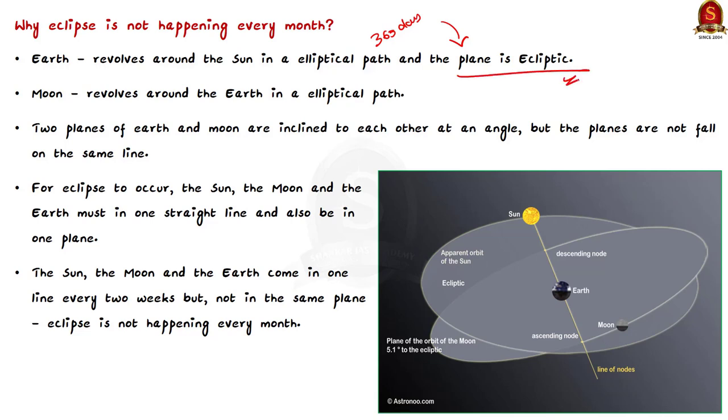At the same time, the moon also revolves around the earth in a near elliptical path. The moon takes 28 days to complete one revolution around the earth. The fact here is that these two planes of earth and moon are inclined to each other at an angle.